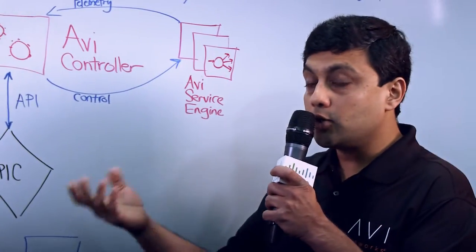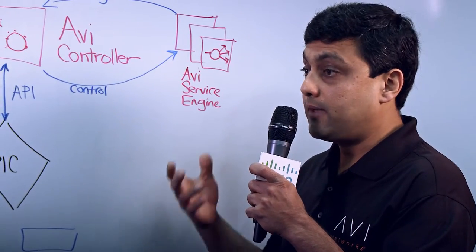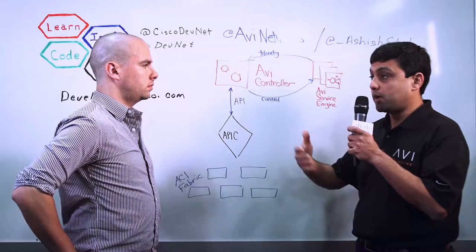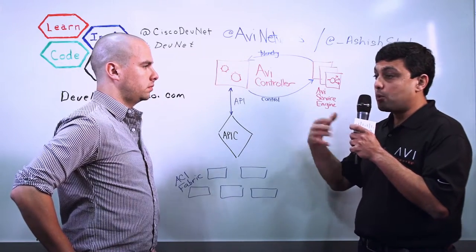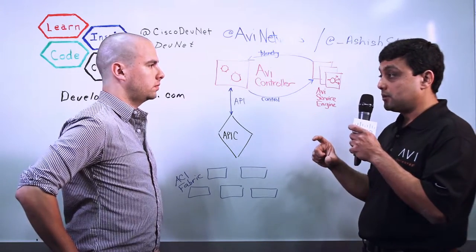Absolutely. So we are working jointly with Cisco, with mutual customers in ACI APIC, and we have a financial services customer, for example, that used APIC and ACI for automating the network at layer-to-layer-3. And AVI provided the missing, the last-mile solution in form of the load balancers, the L4 to L7 solution.